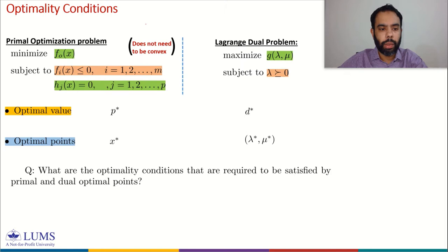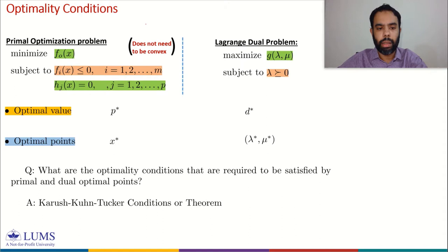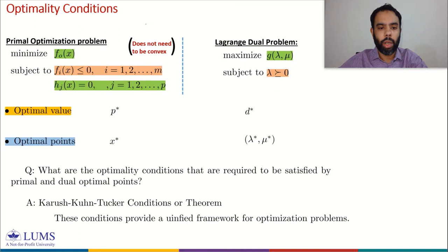To answer this question, we have Karush-Kuhn-Tucker optimality conditions, abbreviated as KKT conditions or KKT theorem. These conditions establish a relationship between X star — the solution to the primal problem — and lambda star, mu star, the optimal points of the Lagrange dual problem. These conditions establish a unified framework for optimization problems. In some textbooks, these KKT conditions are also referred to as the saddle point theorem.